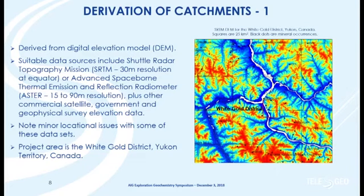The example I'm using here is the White Gold District in the Yukon, Canada. We're looking at a DEM derived from SRTM data. One thing you'll notice is that the derived hydrology from the DEM is not exactly matching the published hydrology available from the Yukon government. Quite often with different DEMs, you do have these locational differences that are going to affect how you generate your catchments.